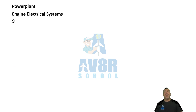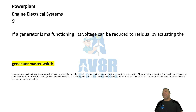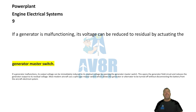Number 9. If a generator is malfunctioning, its voltage can be reduced to residual by actuating the generator master switch.